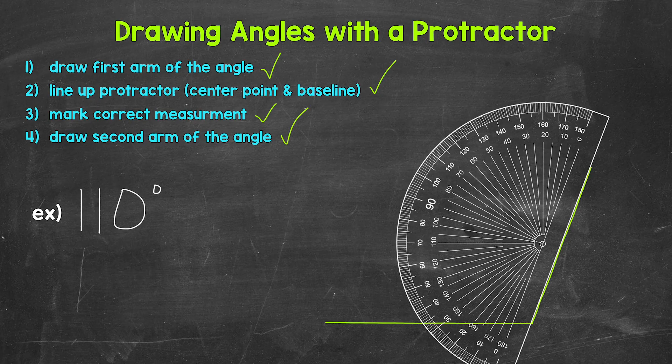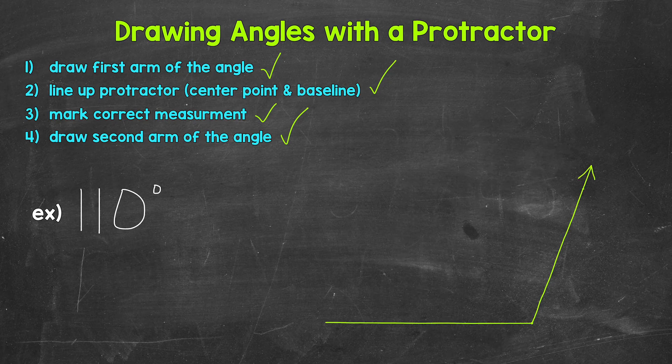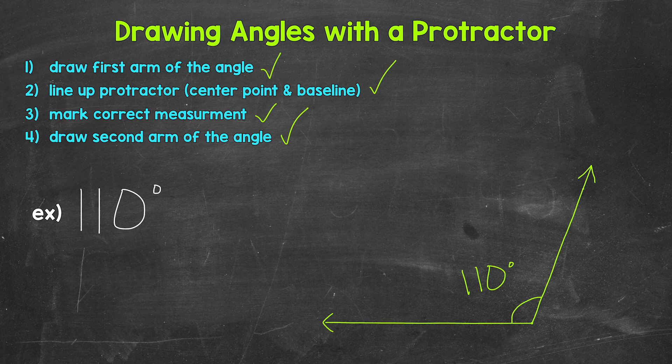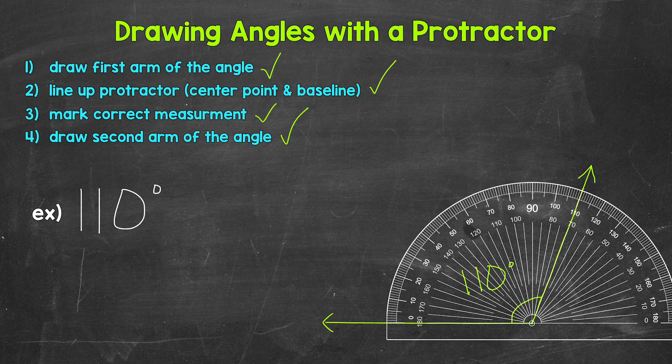Let's take away the protractor now and see what we have. Here's our angle. We can draw arrows on the arms and label the angle as well. We are done with our angle, but let's double check to make sure we have a 110 degree angle here. Our protractor is lined up and it looks like we are good to go. We have a 110 degree angle.